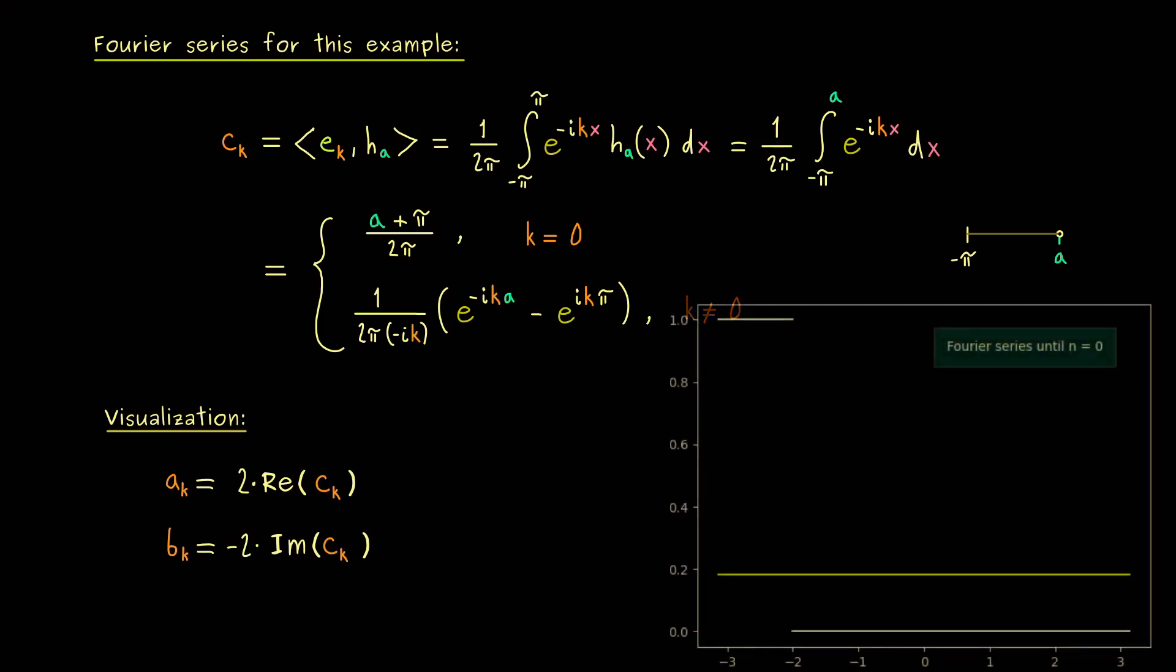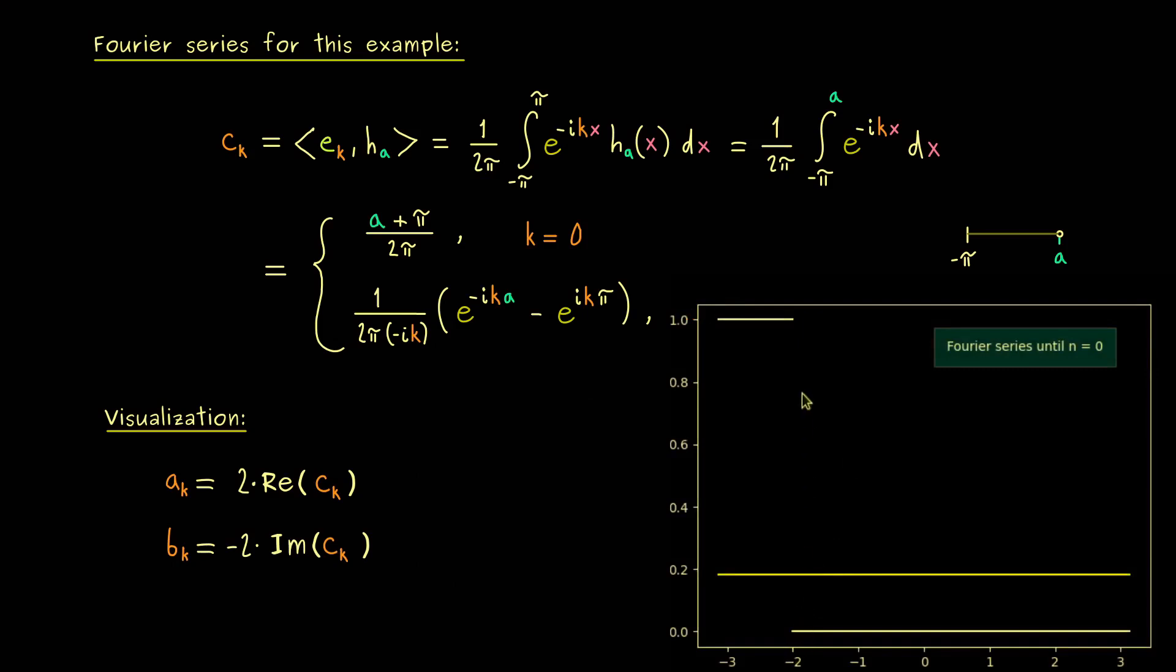Then I would say, let's start plotting the function. And here you can see, we have chosen a to be equal to minus two. Hence, these two lines here represent our function h_a. And the line here in the middle is already our Fourier series up to n is equal to zero. Which means it's only the constant function given by our constant here.